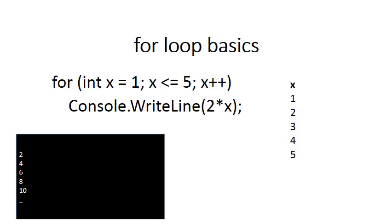Now I've made the WriteLine statement slightly more complex — it does not always print the value of X, but it prints two times X. X starts off at 1, increments by 1 every time, and goes on while it's less than or equal to 5. So X takes on values 1, 2, 3, 4, and 5, but every time the body of the loop is done it prints 2 times X. So what appears on the screen is 2, 4, 6, 8, and 10.